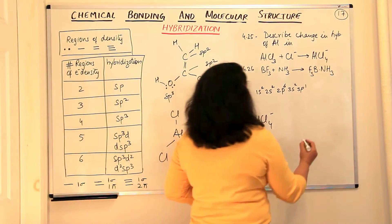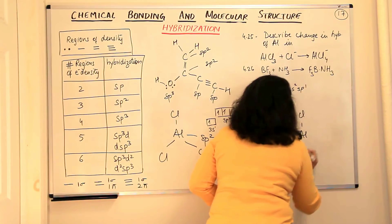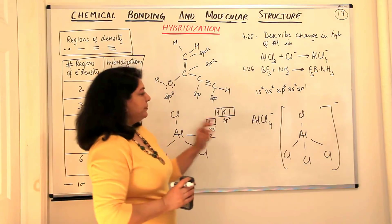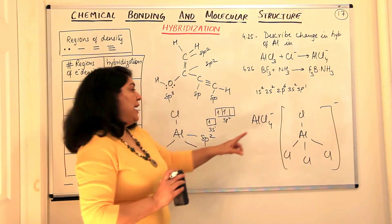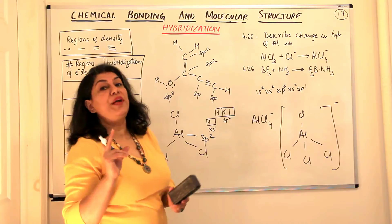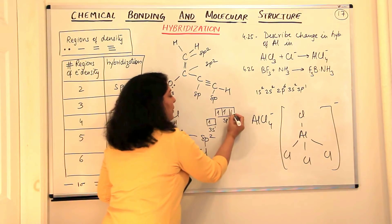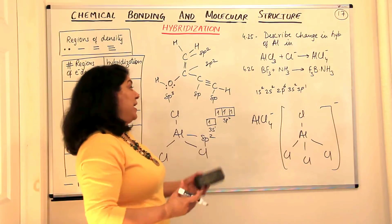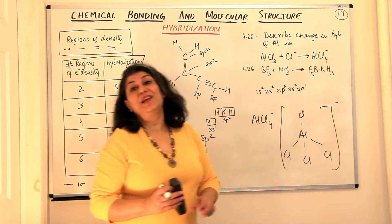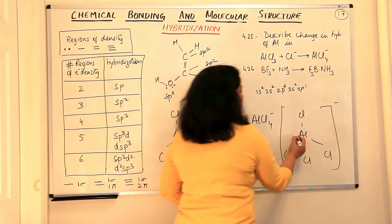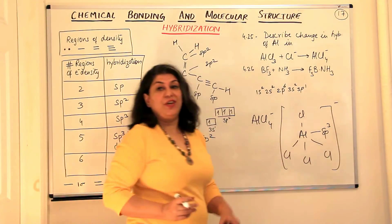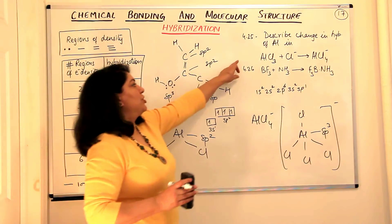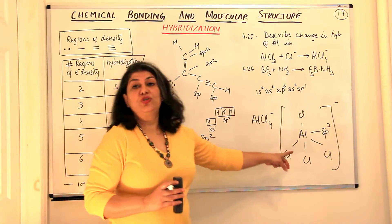In AlCl₄⁻, aluminum bonds to four chlorine atoms. The extra electron from the negative charge enters aluminum's empty 3p orbital, so aluminum now uses all three p orbitals in hybridization giving four sp3 hybridized orbitals. AlCl₄⁻ has sp3 hybridization and tetrahedral geometry. So in this reaction, the hybridization of aluminum changes from sp2 to sp3.